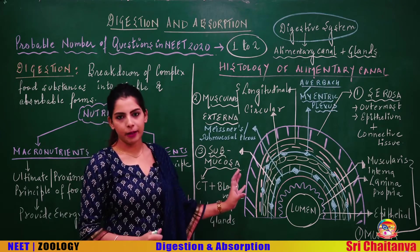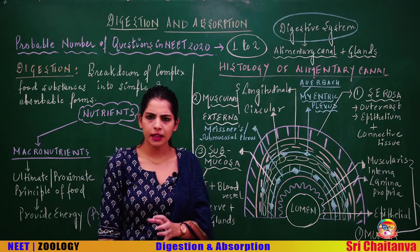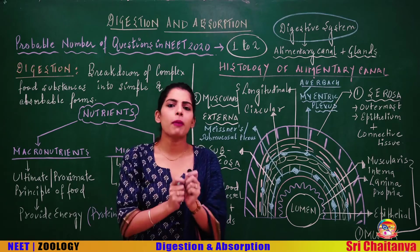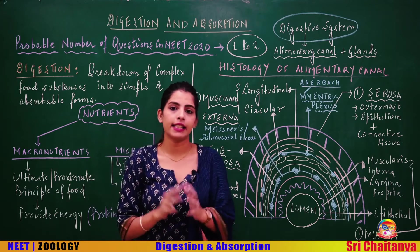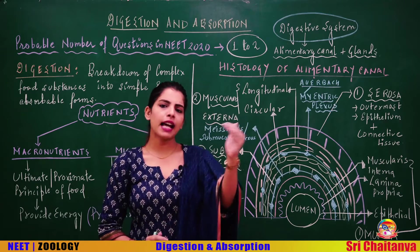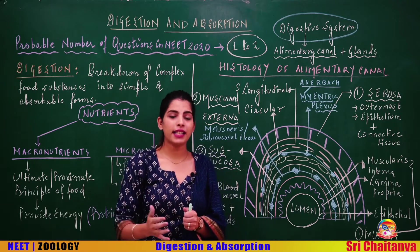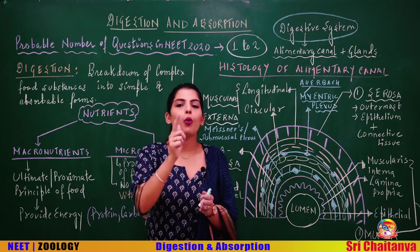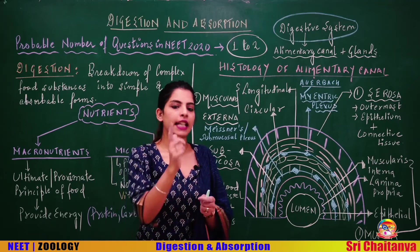Don't be scared by the diagram — it might look complicated but the explanation is easy and you are already familiar with it. What is given in NCERT about the histology of the alimentary canal? Moving from outside to inside — where inside means the lumen — which layers do we see?